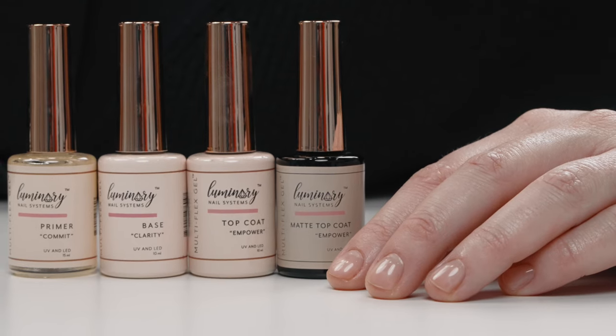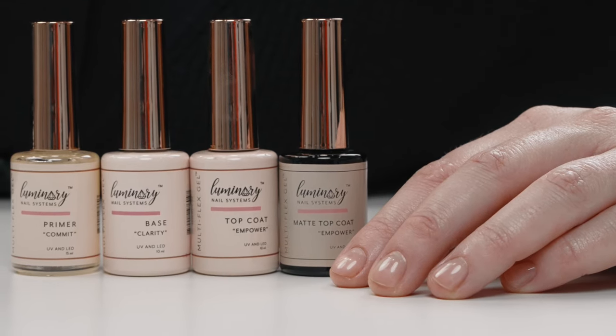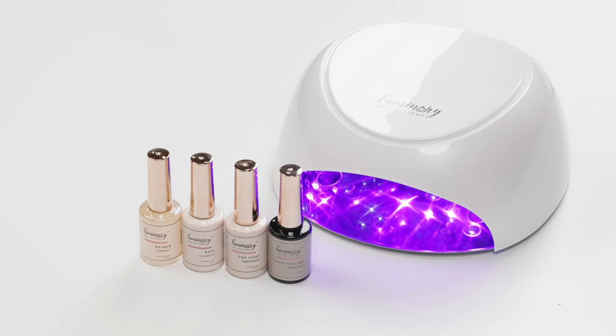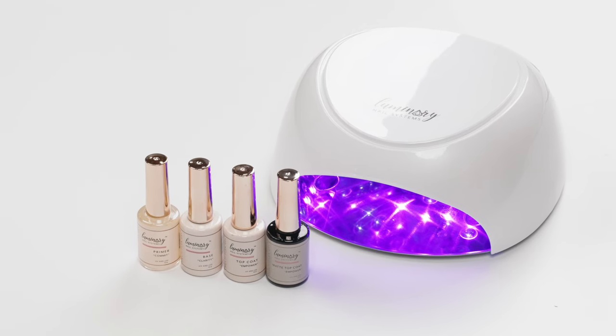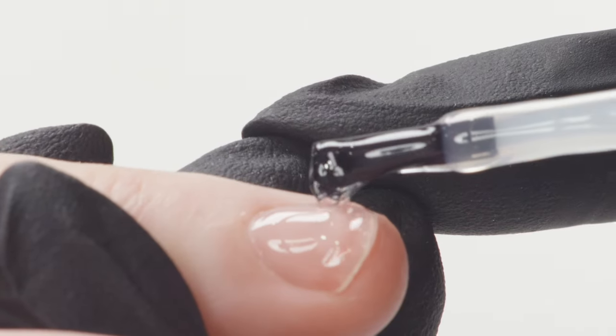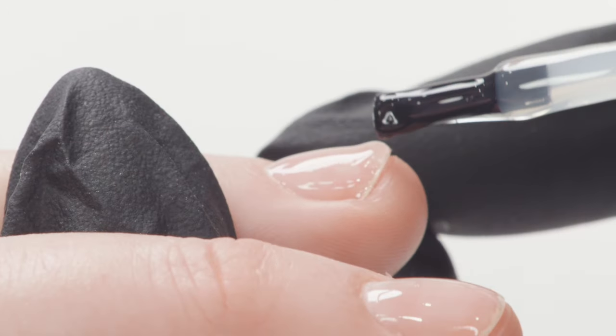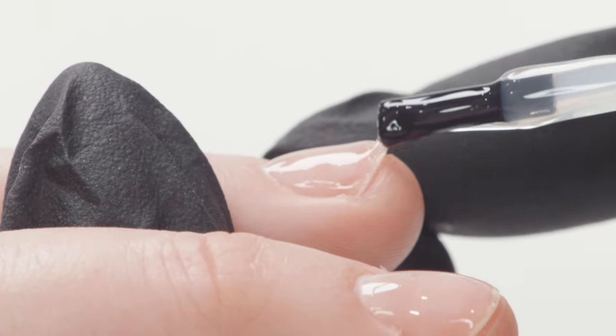We're going to play with Luminary today. It can be referred to as builder in a bottle, flexible gel. Luminary is a base and a builder in one. So you can build a little bit of a free edge with it, but not a lot. It's not used for actually sculpting a nail, but it looks great, especially for those clients who want to work on growing out their natural length.